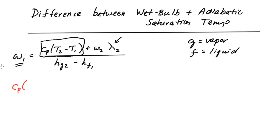So if I do that I would get Cp(T1 - T2), and I have omega 2 times h2 minus omega 1 times that bottom term here, the enthalpy of the vapor at state 2 minus the enthalpy of the liquid coming in.